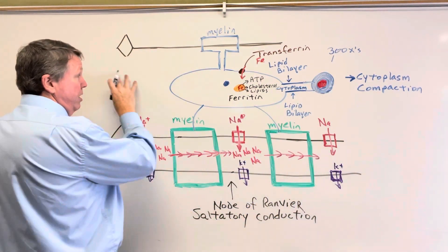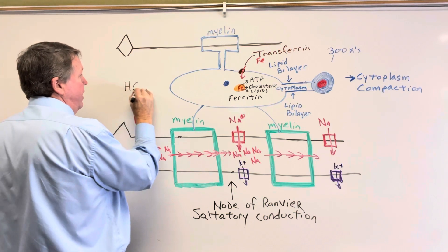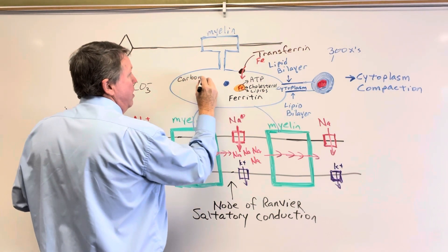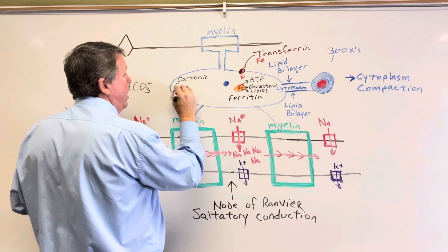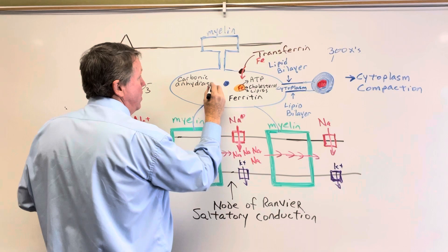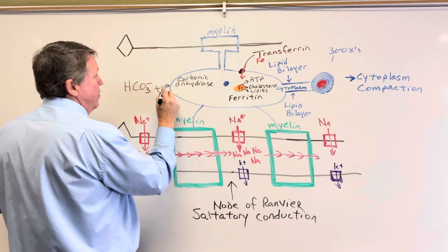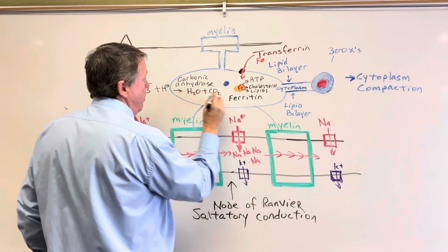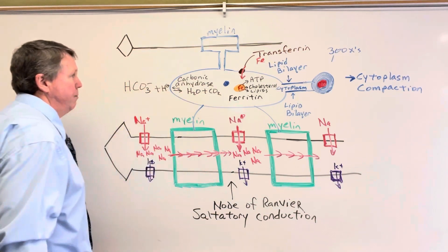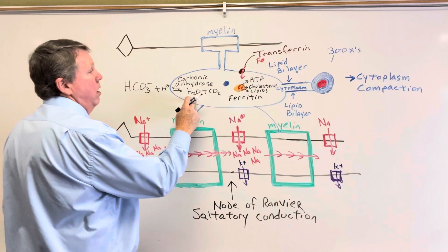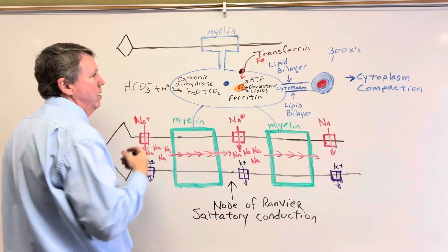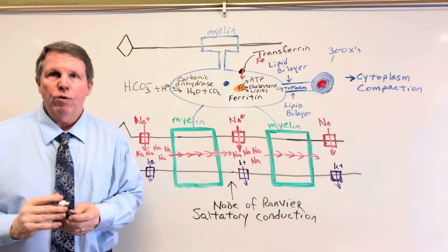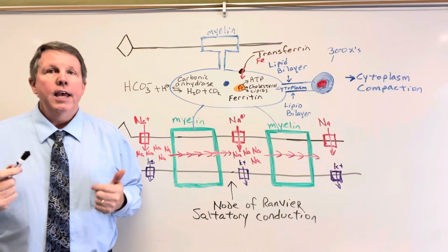The next thing: let's say we're having a change in pH — a buildup of bicarbonate. Inside the oligodendrocyte, you have an enzyme called carbonic anhydrase. It can bring in the hydrogen ion and convert bicarbonate into water and CO₂ — skipping the carbonic acid step. It can work the other way too, depending on what's going on with the pH. So it can act as a buffer for pH. That's it for oligodendrocytes. Thank you so much for watching. Please hit the like and subscribe button, and we'll catch you next time.